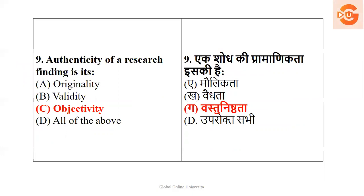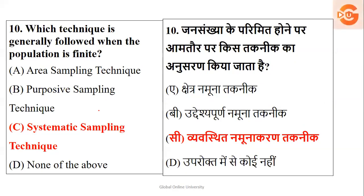Next: authenticity of a research finding is based on what? We can authenticate research based on objectivity, validity, and originality, but the most important factor is objectivity. So the right answer is objectivity.